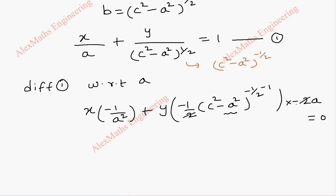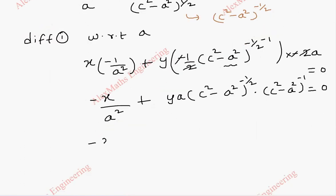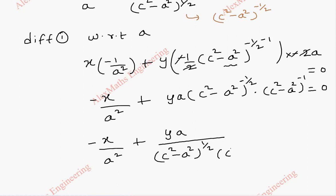We can cancel the 2s and the two negatives. So this gives -x/a² + y × (c² - a²)^(1/2) × a, which simplifies. We split the exponent: -x/a² + y·a / (c² - a²)^(1/2) × 1/(c² - a²) = 0. Rearranging: -x/a² + y·a / (c² - a²)^(3/2) = 0.